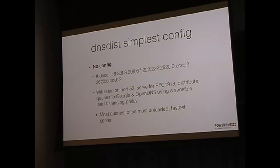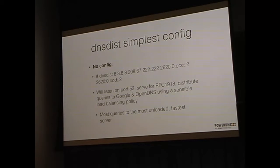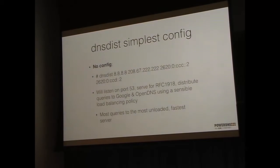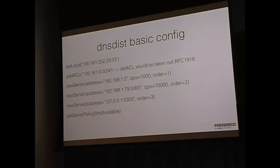Here's the simplest configuration file — and it is no configuration file. This means: listen on port 53, serve only private IP space by default so you're not an open server, and forward queries to Google DNS and OpenDNS over IPv4 and IPv6 using a good standard default load balancing policy. It will automatically pick the fastest server among Google and OpenDNS — in practice it will pick OpenDNS because Google rate-limits you and DNS dist figures that out.